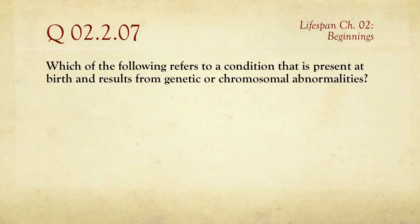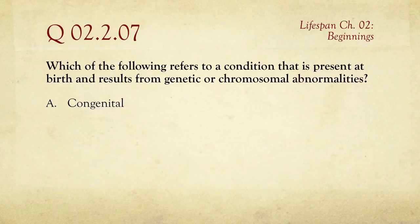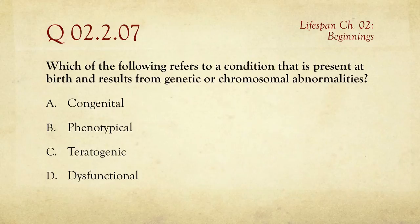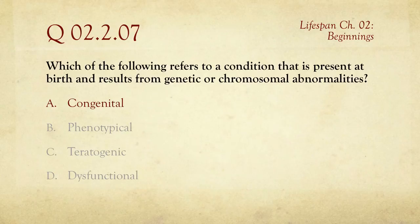Number seven: which of the following refers to a condition that is present at birth and results from genetic or chromosomal abnormalities? The choices are A, congenital; B, phenotypical; C, teratogenic; or D, dysfunctional. Dysfunctional just means something bad; teratogenic refers to environmental causes of deformities; phenotype refers to what you actually look like as opposed to your genotype. The answer is congenital — 'con' meaning 'with' and genes — so it's something you come with from birth.